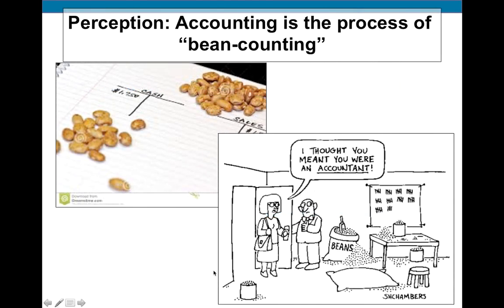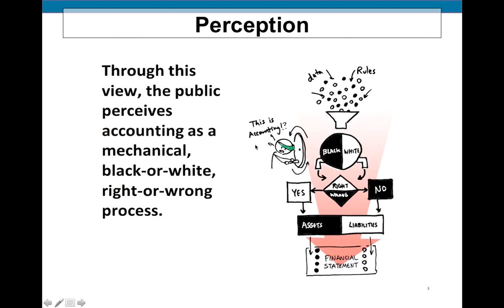The purpose and importance of accounting: there is a perception out there that accounting is a boring process of just bean counting. The perception of some people outside of the field is that accounting is mechanical, black and white — we have data, we have rules. There are right decisions and wrong decisions, and based on these decisions, we simply record assets, liabilities, and create financial statements.